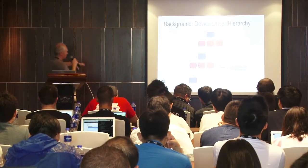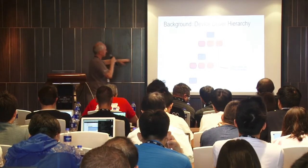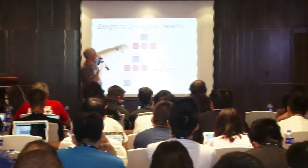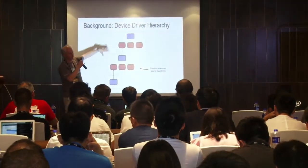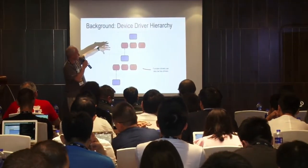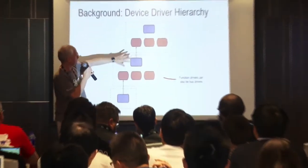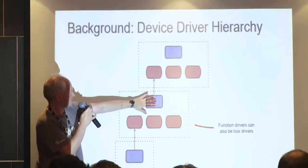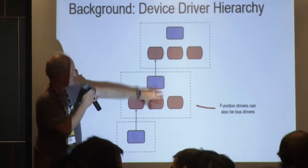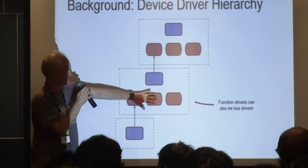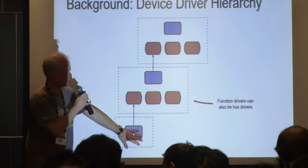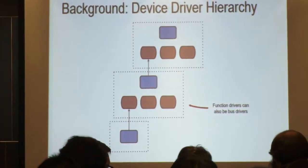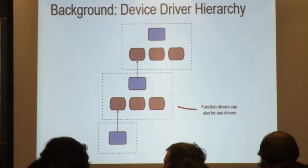Going back to our original diagram, you can see why a bus driver also has a function device object — function drivers can also be bus drivers. You have a function driver that binds its function device object to the physical device object, but then it creates more physical device objects. You get this tree structure that grows from the root.